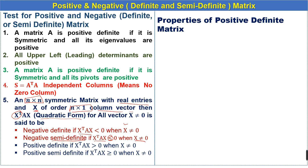The matrix is positive definite if the product x-transpose A x is greater than zero for all non-zero column vectors x. The matrix is positive semi-definite if the product is greater than or equal to zero, meaning the product can equal zero even when the column vector is not zero. These are five tests to identify whether a given matrix is positive or negative definite or semi-definite.